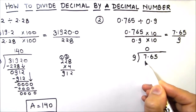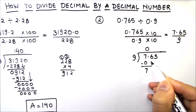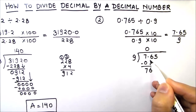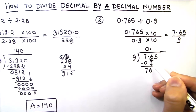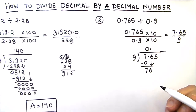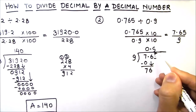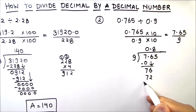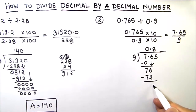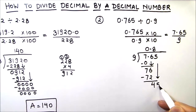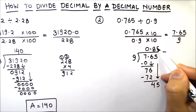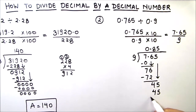9 times 0, then we drop down the next digit, which is 6. Before that, we place the decimal point directly above the decimal point in the dividend. Now 76: 9 times 8 is 72. 76 minus 72 gives 4. We drop down the next digit, 5, making 45. 9 times 5 is 45, remainder 0. This completes our division, and the answer is 0.85.